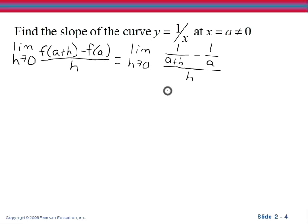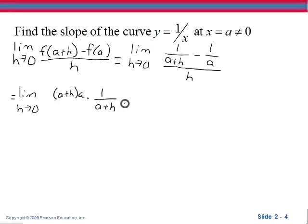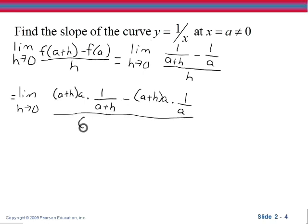Now since we have fractions within fractions, we have a complex fraction. To eliminate the two fractions in the numerator, we will choose the common denominator, which will be (a + h) times a, and we'll multiply every term top and bottom by the common denominator. So this gives us the limit as h approaches 0, multiplying the first term in the numerator by (a + h) times a, the second term by (a + h) times a, and on the bottom, that term by (a + h) times a.